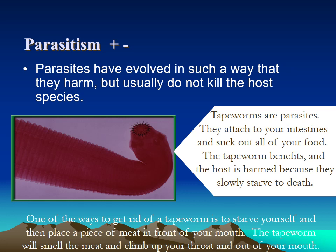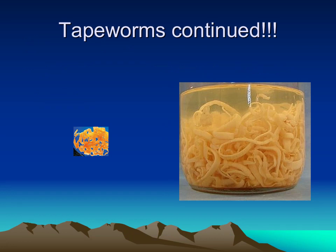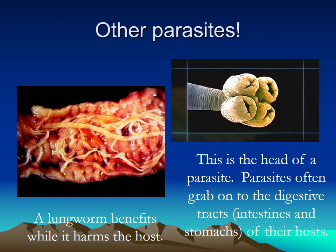The host is the organism that the parasite lives on. In this example we have tapeworms, which attach to your intestines and steal food from the host. The tapeworm gets something good — food — and the host is harmed because it's losing its nutrients. The head of the parasite grabs onto the digestive tract to the stomach and intestines and steals the nutrients. On the left-hand side you can see a lung worm.